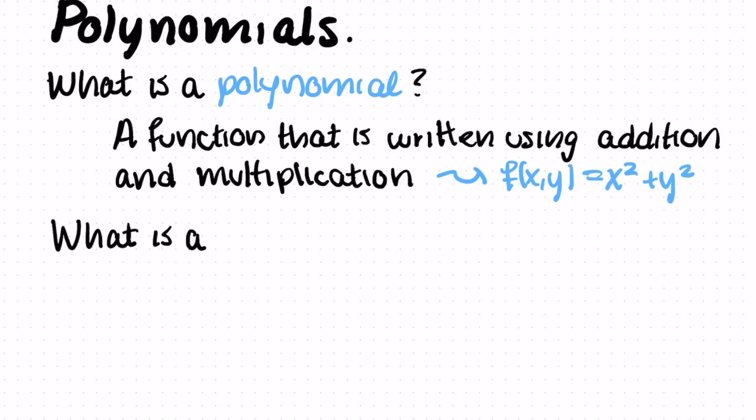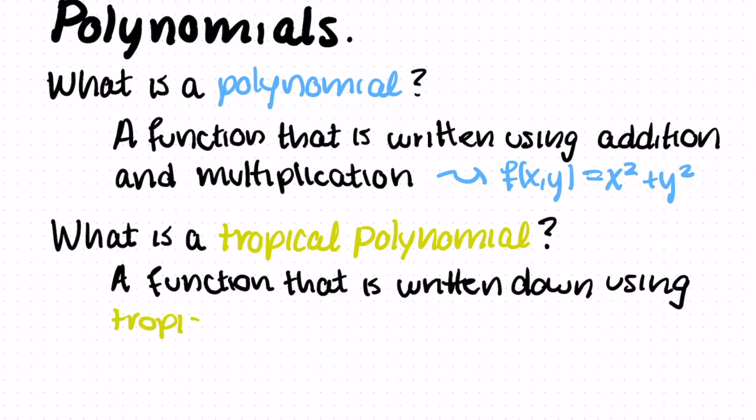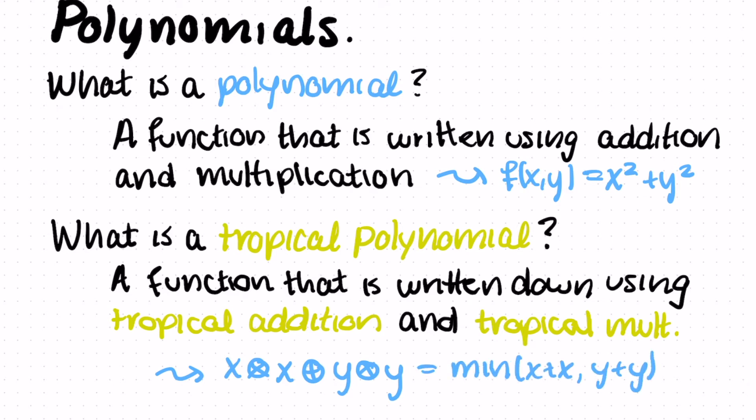Now we're going to translate that definition to the min plus world. A tropical polynomial is a function that's written down using tropical addition and tropical multiplication. So for example, we might have x tropical times x tropical plus y tropical times y. This is equal to the minimum of x plus x and y plus y. Or in short, this is the minimum of 2x comma 2y.